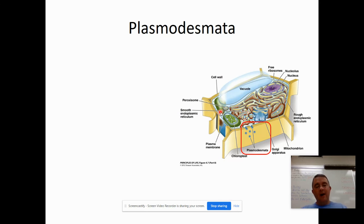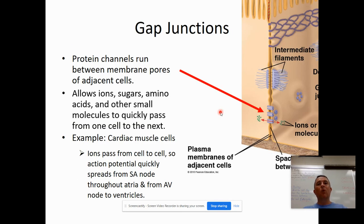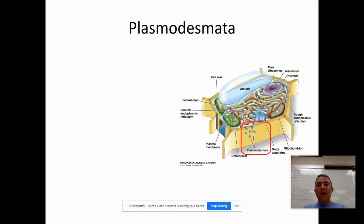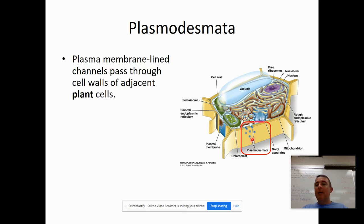That brings us to the fourth and final specialized cell junction. Plasmodesmata are almost exactly the same thing as gap junctions, except for one important detail: plasmodesmata only occur in plant cells and plant tissue, whereas gap junctions were only in animals. So if a gap junction is channel proteins running from one animal cell to another, plasmodesmata are simply channels running from one plant cell to another.